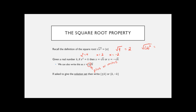When you're asked to give the solution set, which is usually how it's worded in ALEX, that means you're going to write it in curly braces. You can either write plus-or-minus the number, or write your two numbers comma-separated — the positive and the negative. The square root property allows us to solve an equation by taking the square root of both sides, giving us two possible answers and two equations to continue solving.